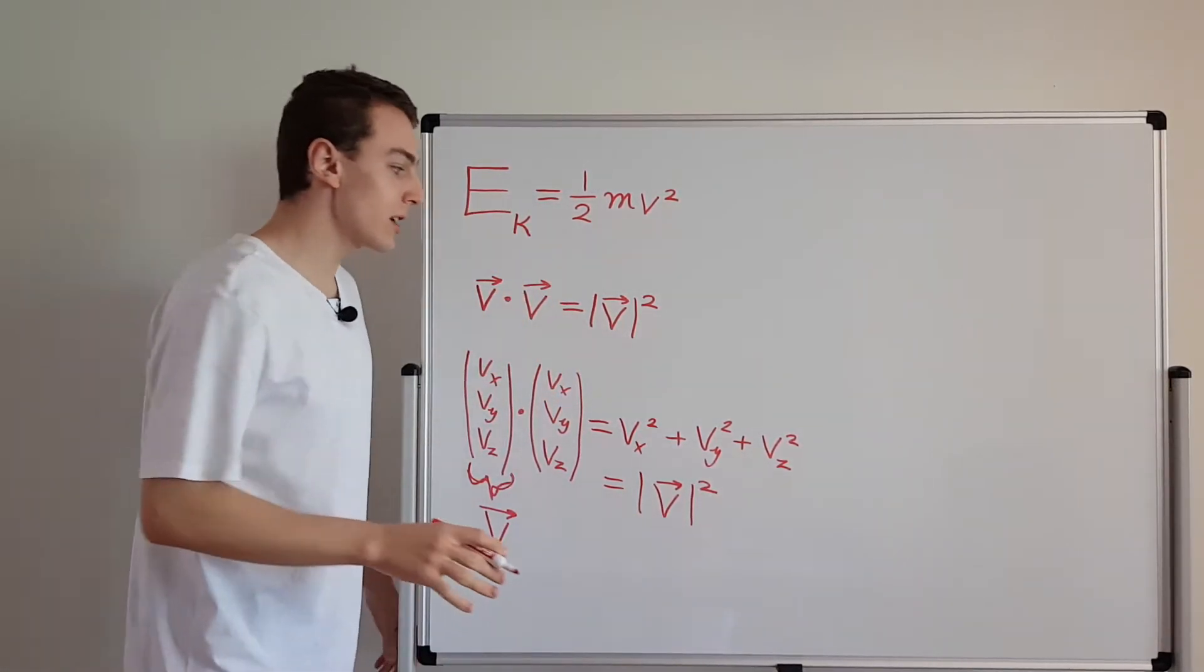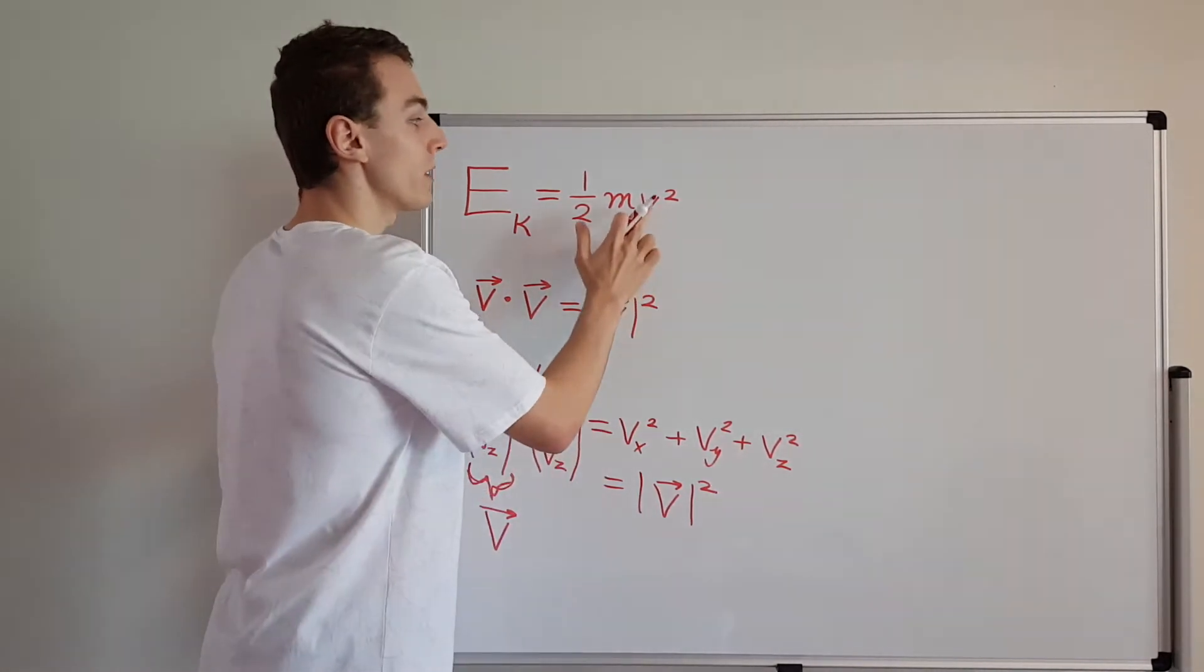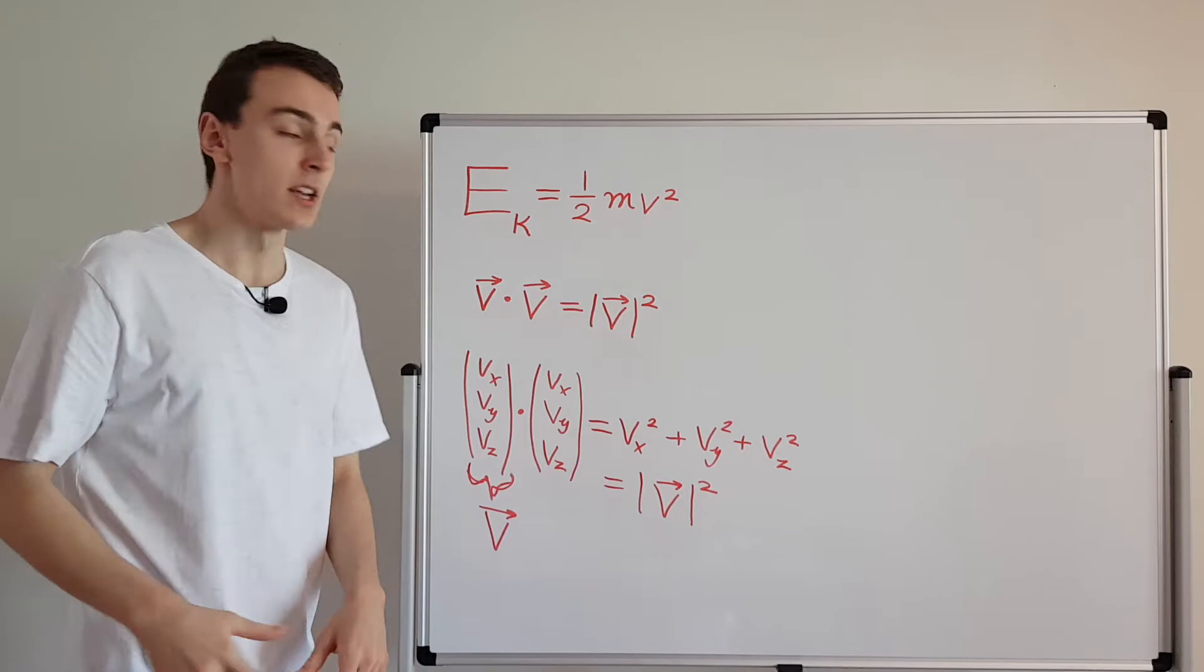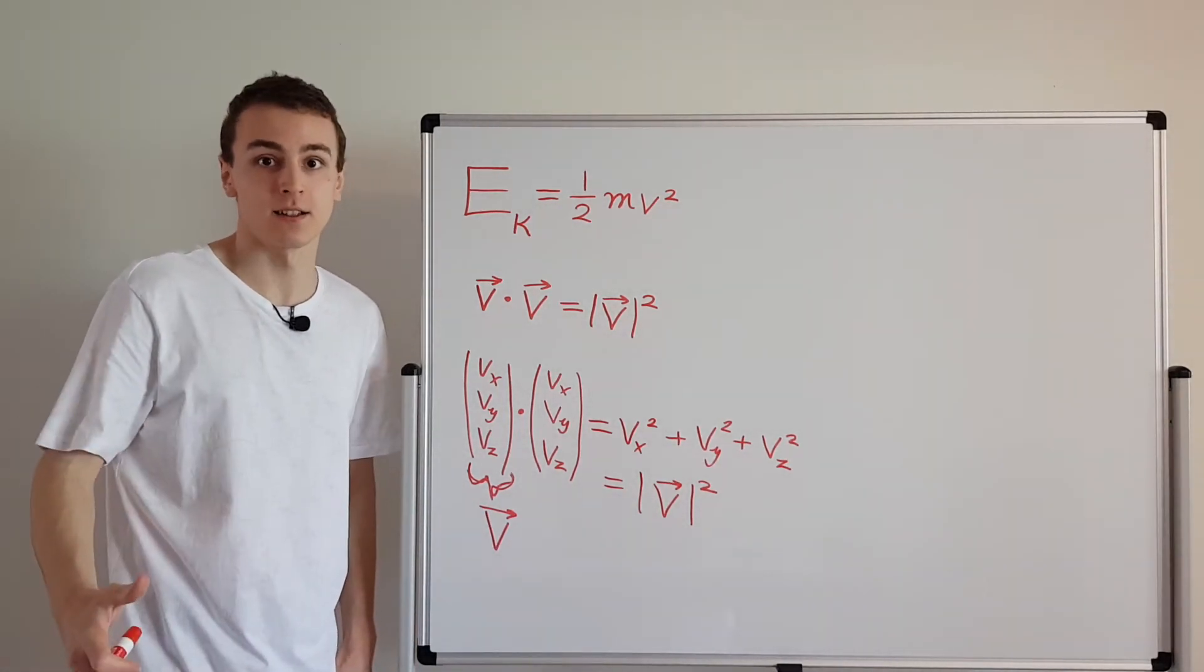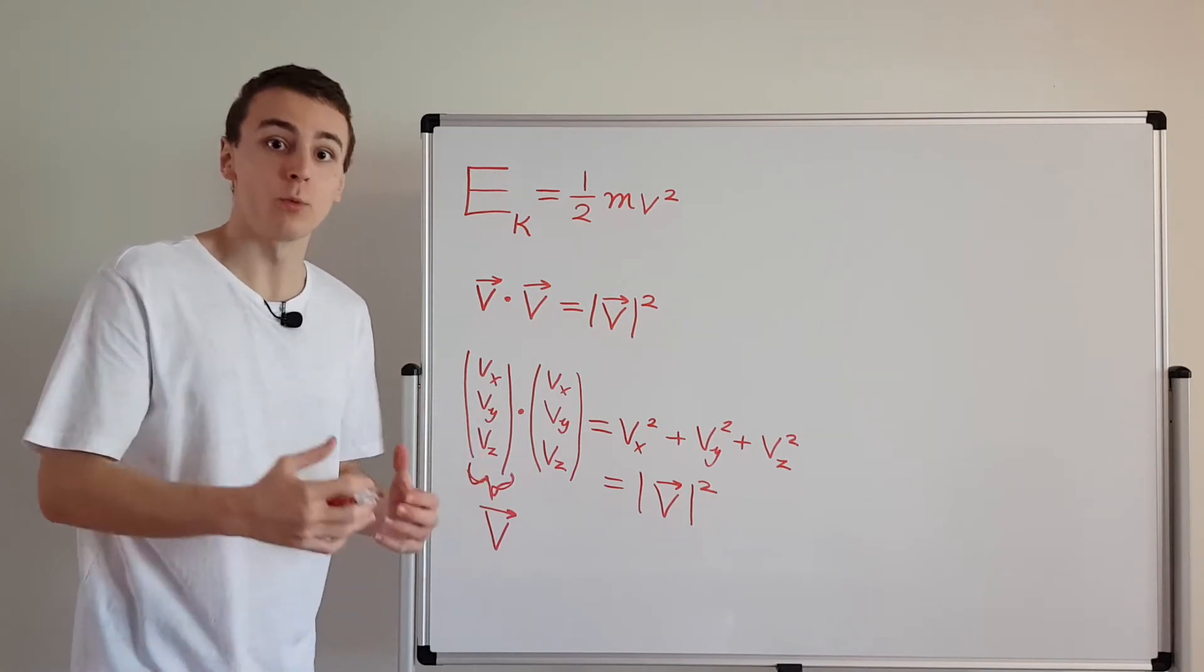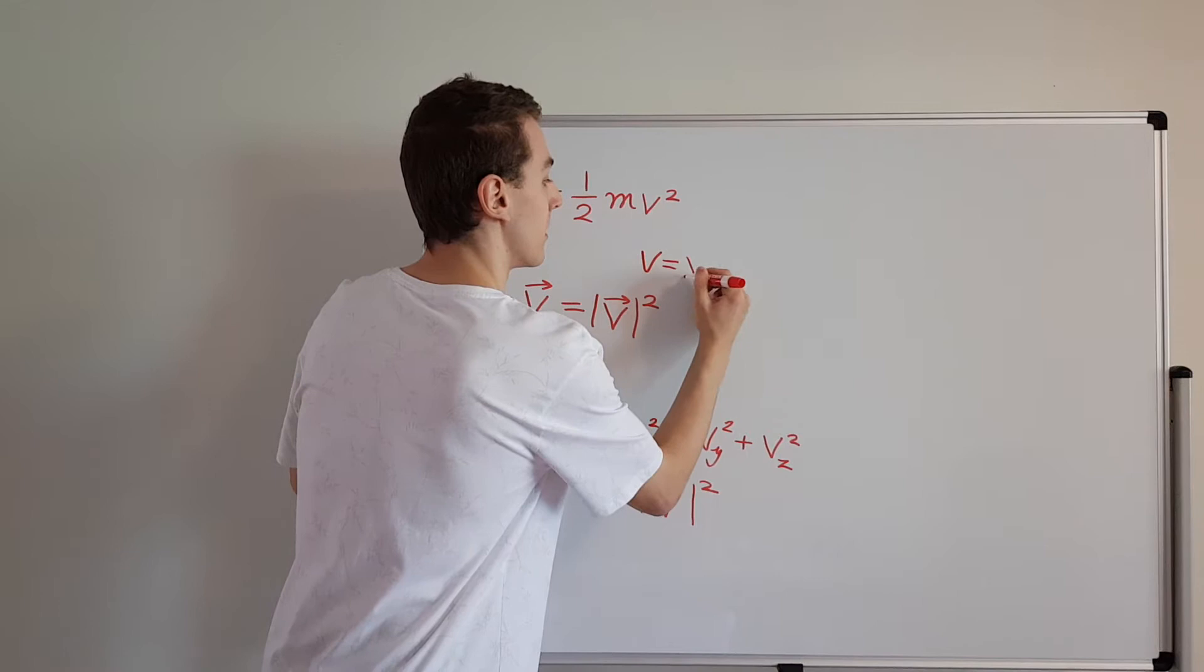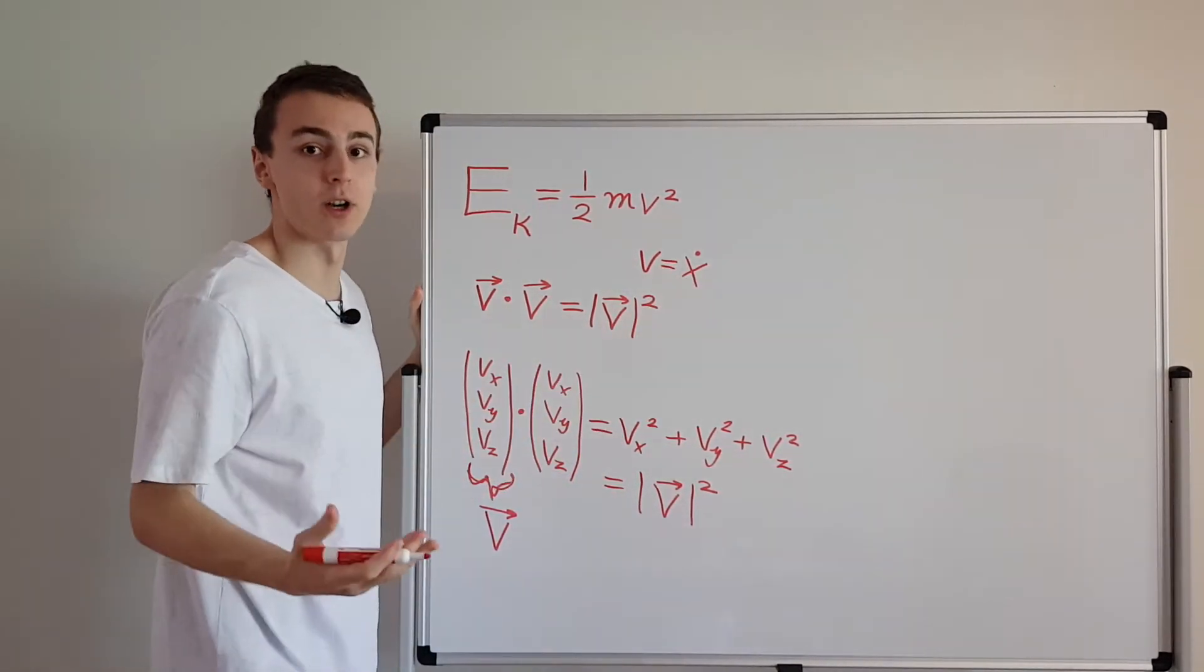If we just wanted the magnitude of the vector we would take the square root of this, but we actually want the square. So this v here is just standing in for the magnitude of the velocity. Velocity is a very useful quantity in Newtonian mechanics. We prefer to deal with velocity, and even in Lagrangian mechanics we prefer to deal with velocity, because V is essentially x dot, the time derivative of position.